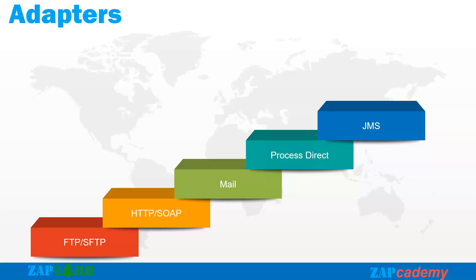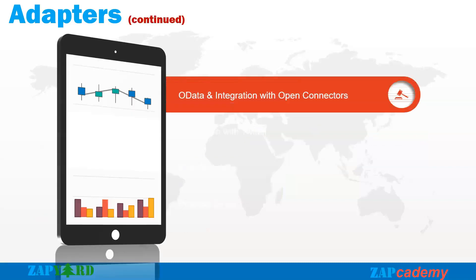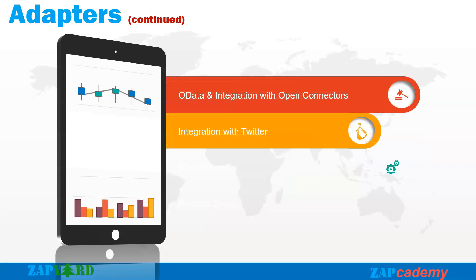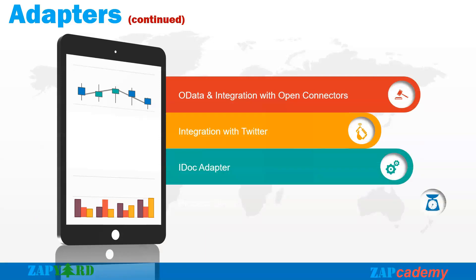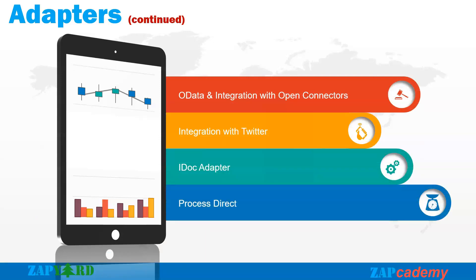Adapters are another concept which needs good clarity. Week 6 will also be dedicated to adapters. This week our trainer will cover OData, integration with Open Connectors, integration with Twitter, iDoc adapter, and ProcessDirect. These are commonly used adapters that CPI consultants work with day in and day out. Our hands-on exercises will help participants understand the nuances and benefits of each adapter.